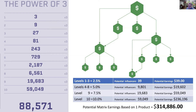So three positions on your first level, three on their first — that's 9, then 27. That continues on to 10 levels: 59,049 people in those 10 levels. The 10 levels is the base of your plan. This isn't the entire plan — this is just the base of your plan.